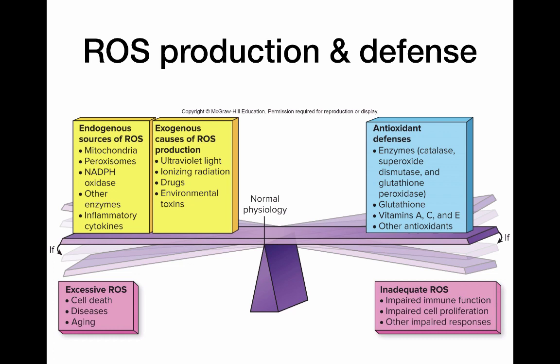Sources of free radicals include endogenous ones — like from the mitochondria during oxidative phosphorylation, and also when someone is very inflamed — as well as exogenous sources like UV light, ionizing radiation, and lots of environmental toxins. Our antioxidant defenses include enzymes like catalase, superoxide dismutase, and glutathione peroxidase — the grandfather of all antioxidant enzymes. Glutathione is the most potent antioxidant that we have and plays a role in almost all of our detox pathways.